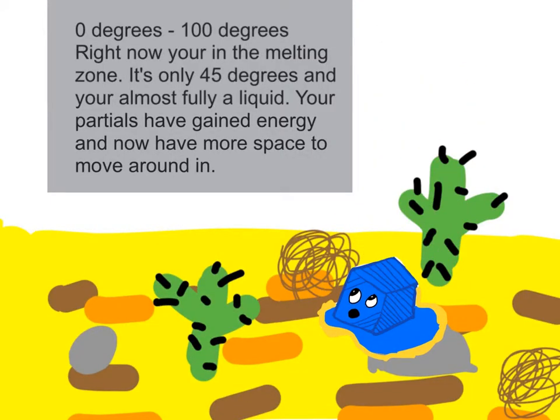Where am I? It's so warm! Don't worry, I've just brought you to the desert biome. It's around zero degrees to a hundred degrees. Right now you're in the melting zone. It's only 45 degrees and you're almost fully liquid. Your intermolecular particles have gained energy and now have more space in between them, which means they have more space to move around.